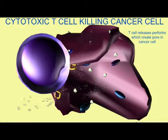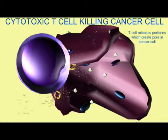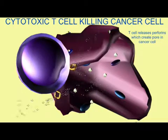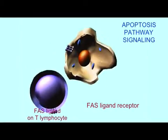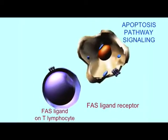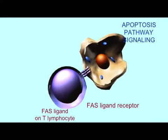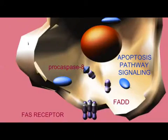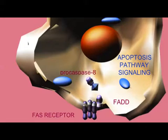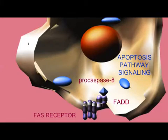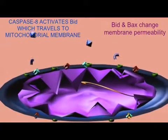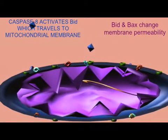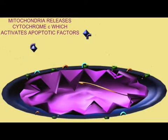Cytotoxic T-cells are also capable of signaling the body cell to undergo apoptosis. Our body cells possess a number of genes which can cause programmed cell death, and so when a cell has gone bad, it can be stimulated to activate its own genes, which cause it to undergo this apoptosis, or programmed cell death.